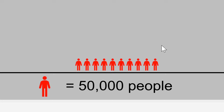You want to make your icons in the order that you want them to appear, because that is by default the order in which the animations will be applied. Now I have 10 icons here, each representing 50,000 people, so in total I have 500,000 people here, or half a million people.